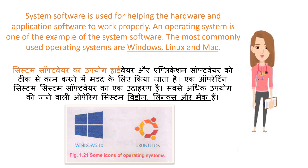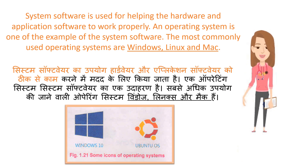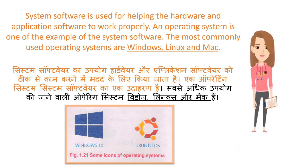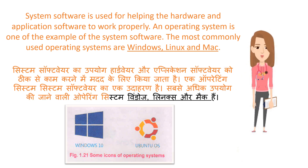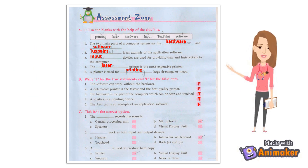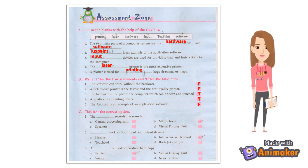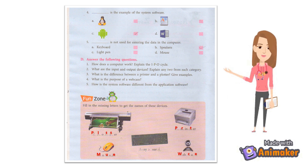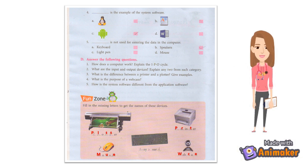Exercises: A) Fill in the blanks with the help of the clue box. B) Write T for true statements and F for the false ones. C) Tick the correct option. D) Answer the following questions.